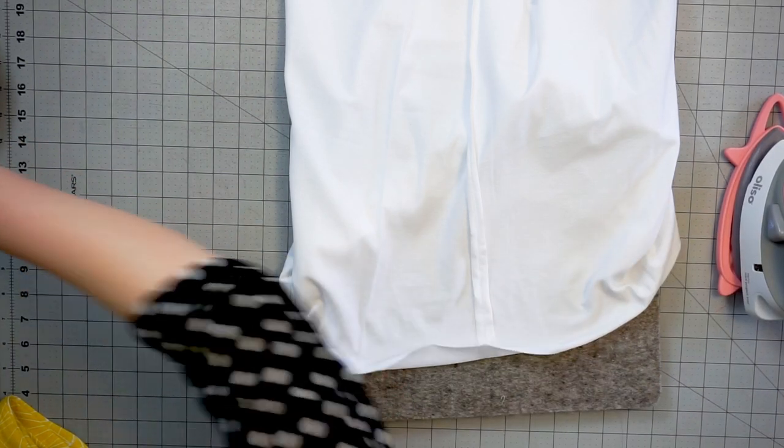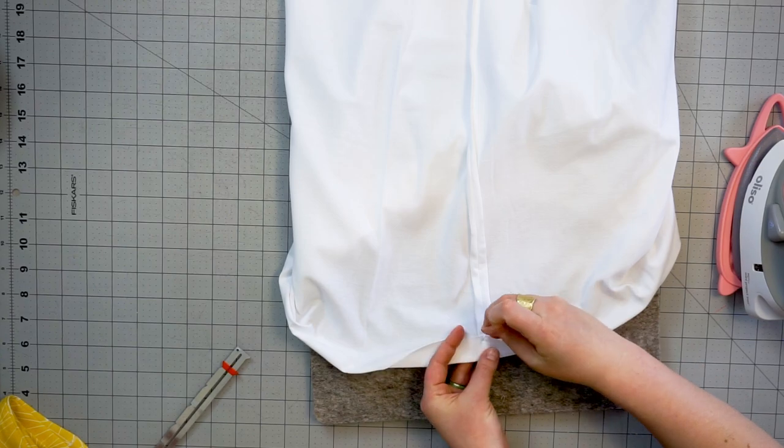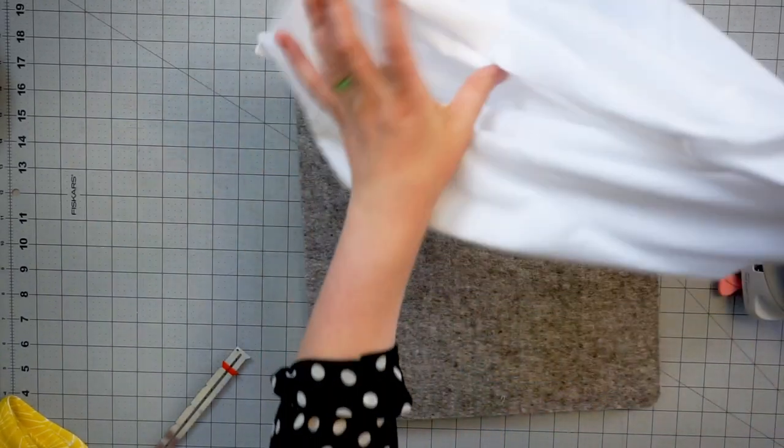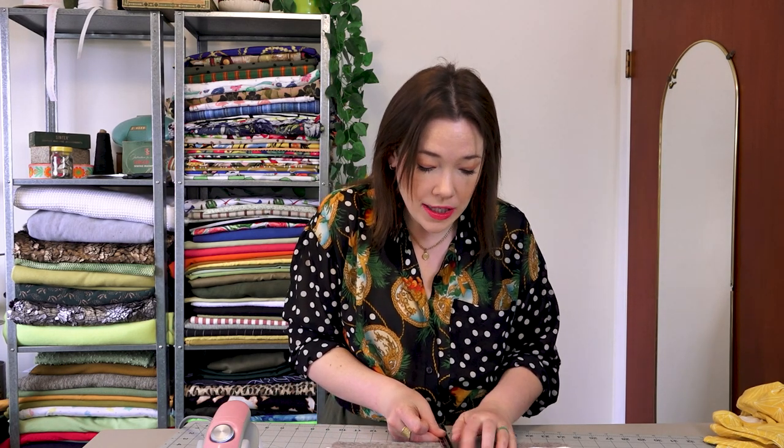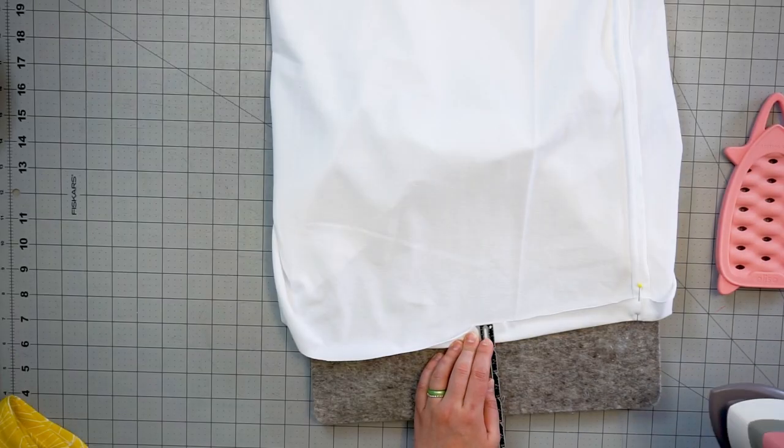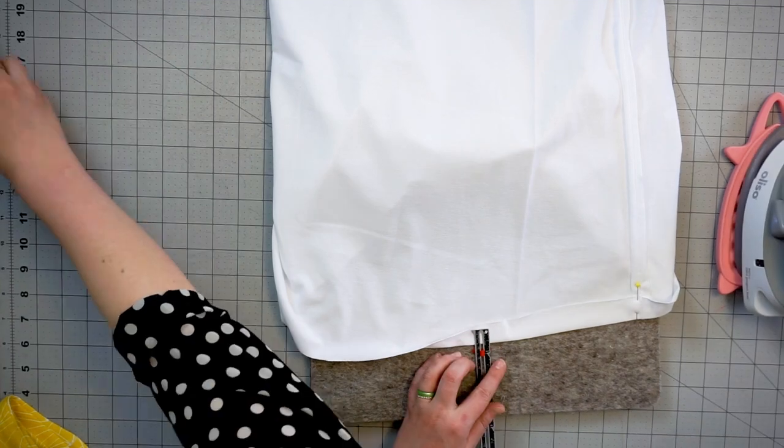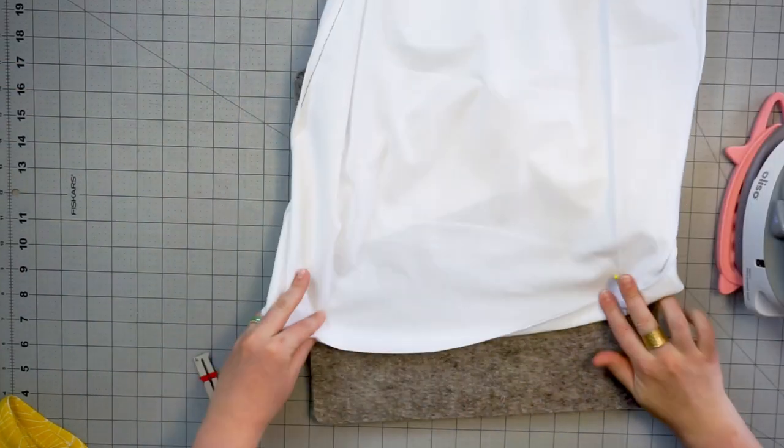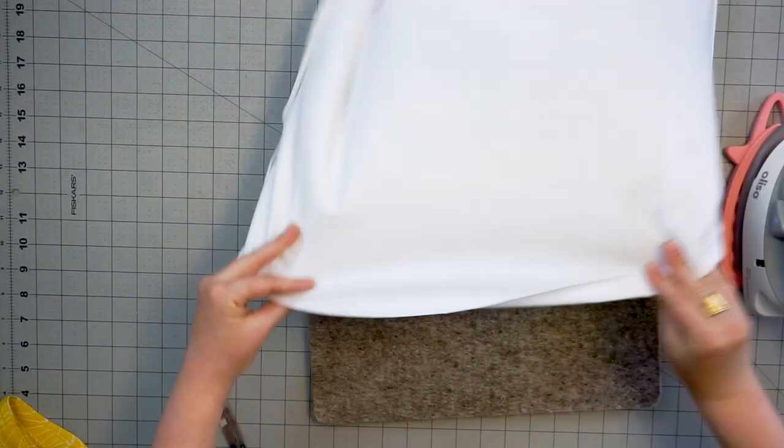I just like to press it up and then pin. This takes the work out of guessing that allowance and just folding it up while you're actively stitching, so I always like to just do this before. I'm just going to go around, press up my entire hem and pin periodically, then we'll head over to the sewing machine and get this hem all stitched into place with our twin needle.